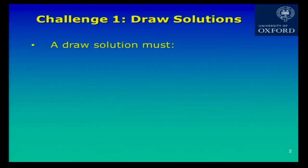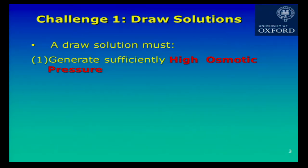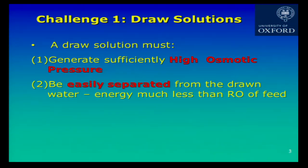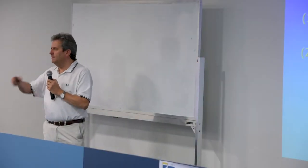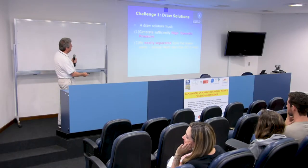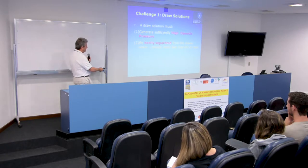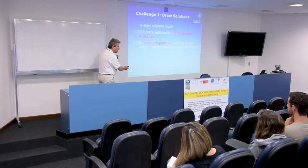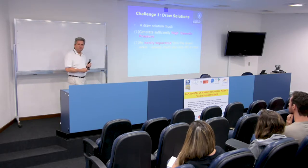What does the draw solution really need to do? It needs to generate a high osmotic pressure, high enough to allow the application to occur. But it also needs to be easily separated from the drawn water, using energy much less than the reverse osmosis of the feed. Because if this energy were bigger than the reverse osmosis of the feed, why not just do reverse osmosis on the feed? The energy of separation should be a lot lower, and I'll show you that it can be low-grade energy — lower temperature, less expensive, more accessible.